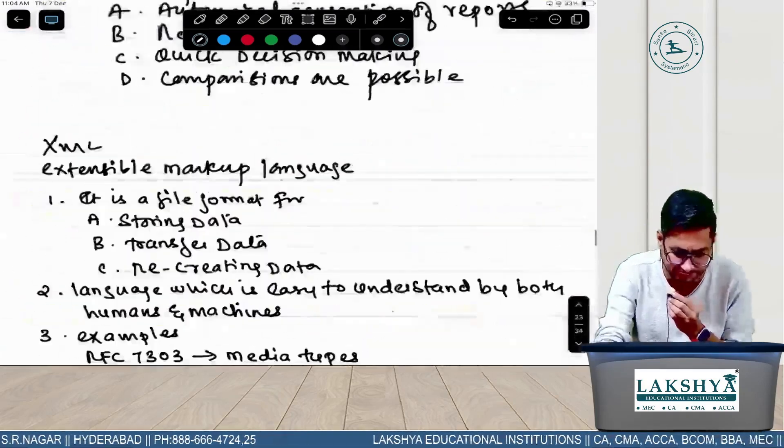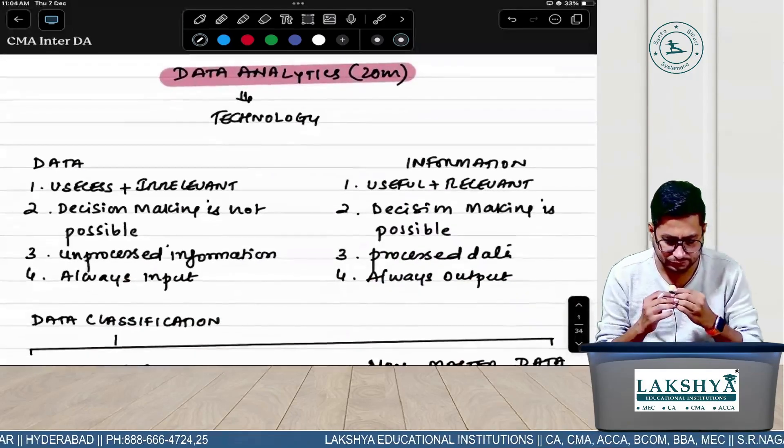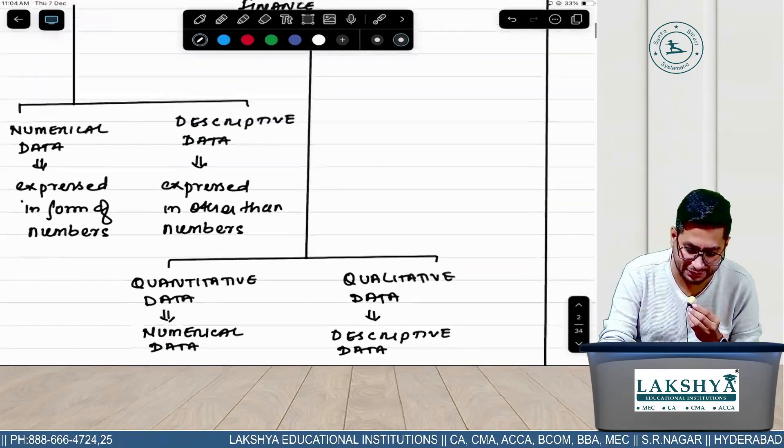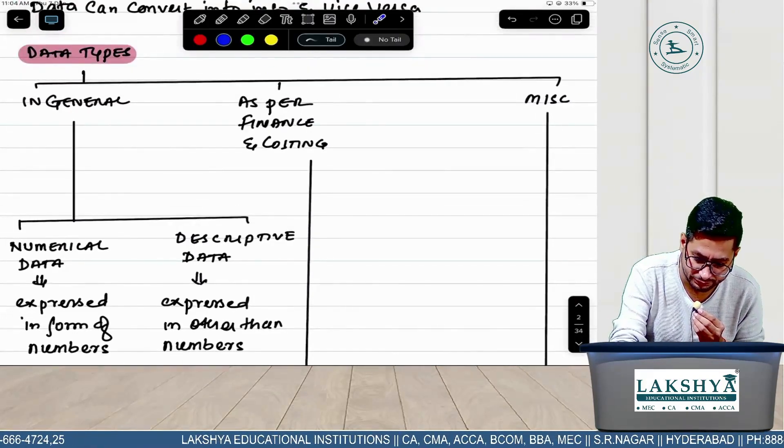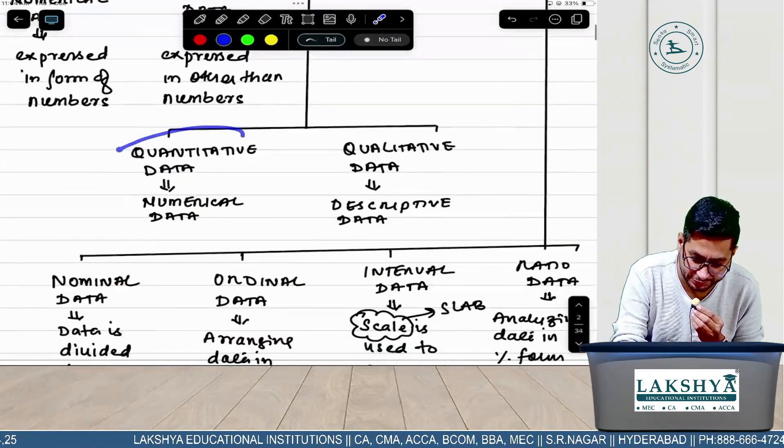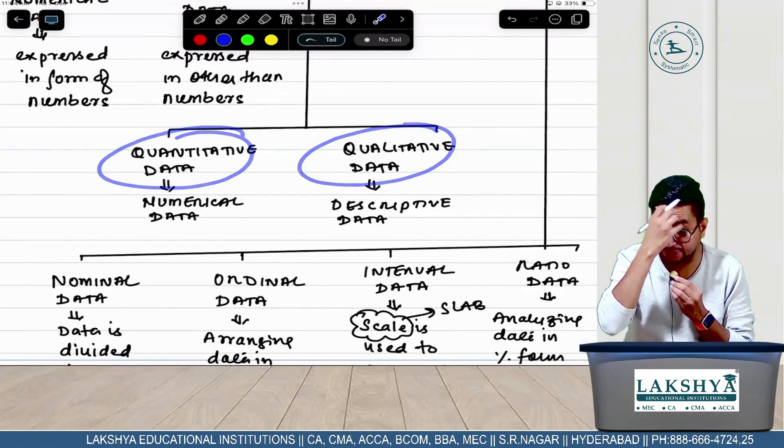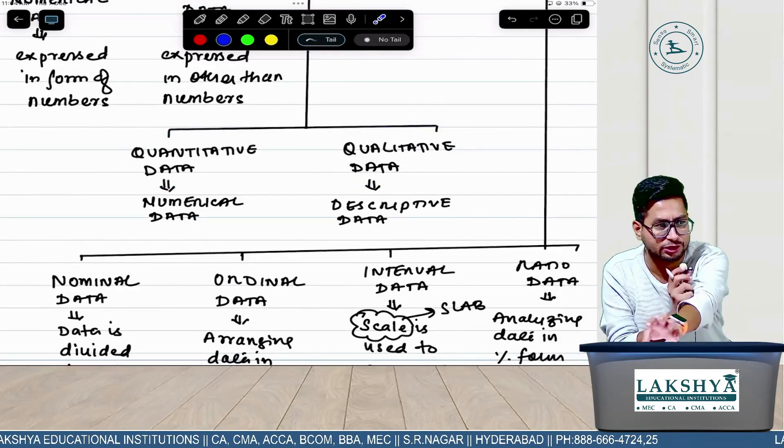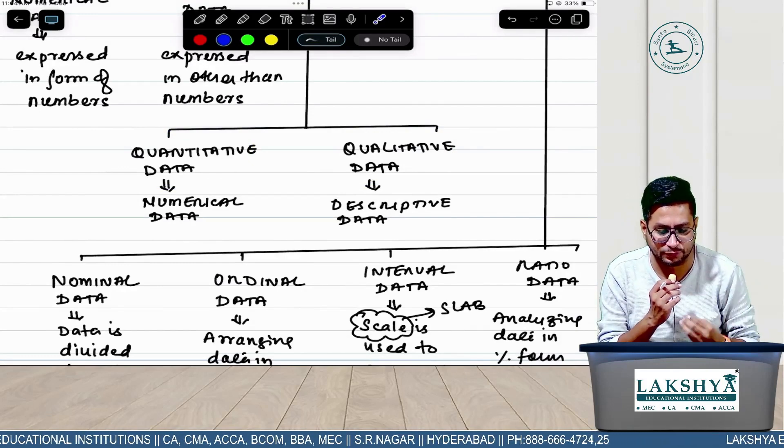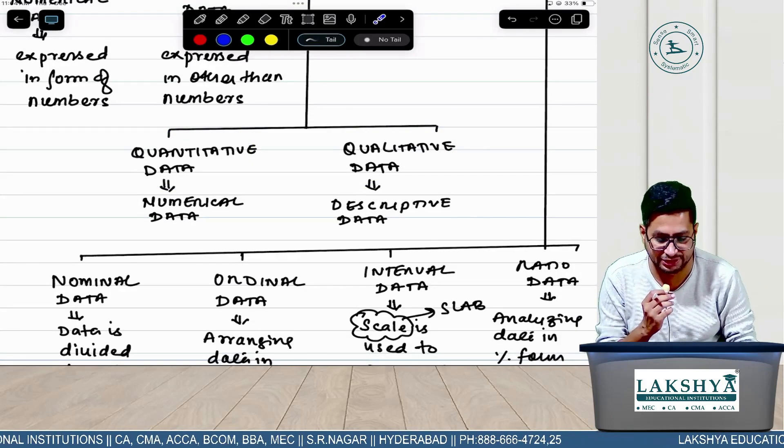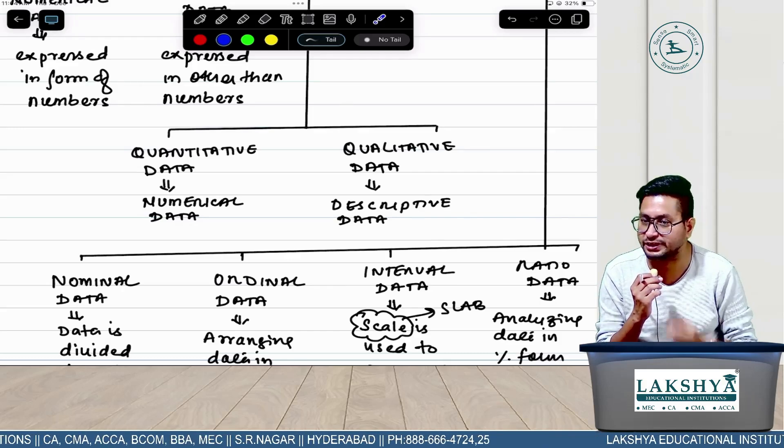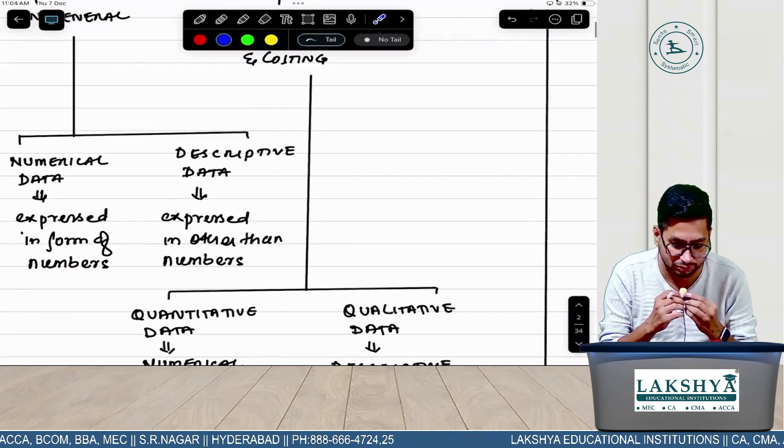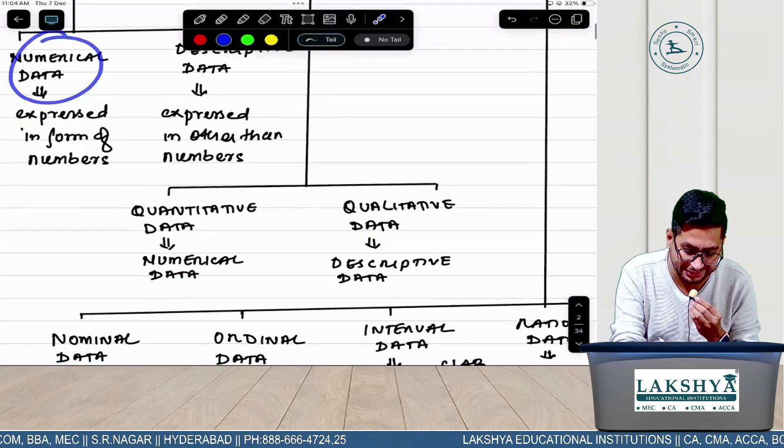Types of data we have seen - in general, as per Finance and Costing, and miscellaneous. Finance and Costing data can be of how many types? Two types - quantitative data and qualitative data. If you write in your own words, you can finish it in two lines.